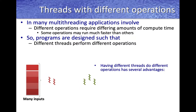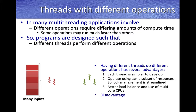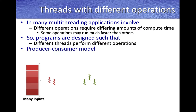Having different threads to perform different operations has its advantages. Each thread is much simpler to develop because it is focused on a specific functionality. Threads operate on the same subset of resources, so lock management and establishing critical sections is streamlined. Running multiple threads simultaneously gives better load balance and enables effective use of multi-core CPUs. However, a key disadvantage is that coordinating these different groups of threads can be challenging, and this is where the producer-consumer model comes into the picture.